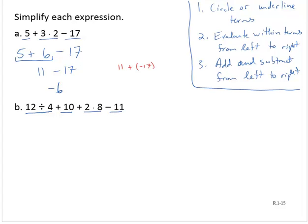Evaluate within terms from left to right. 12 divided by 4, I can evaluate that. That's 3. I can't do anything with the 10, so plus 10. The 2 times 8, that's 16. So I'll say plus 16, minus 11.